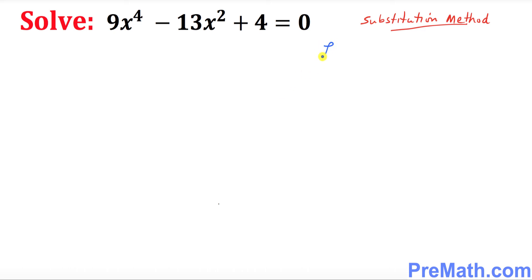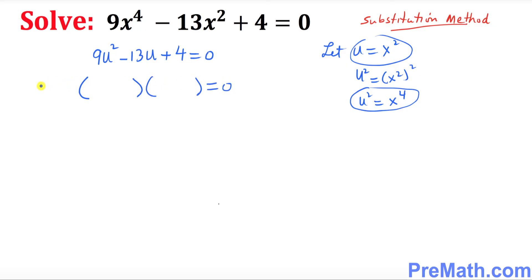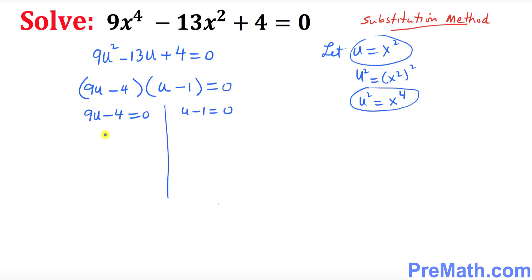Once again, let u equal to x squared, and u squared becomes x squared to the power 2, so u squared equals x to the power 4. Making the substitution in the equation, this becomes 9u squared minus 13u plus 4 equals 0 — a quadratic equation with a u variable. The possible factors are 9u minus 4 and u minus 1. Since these two factors equal 0, we split them up: 9u minus 4 equals 0, and u minus 1 equals 0.